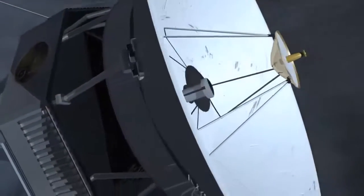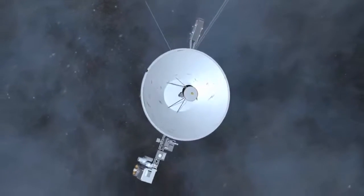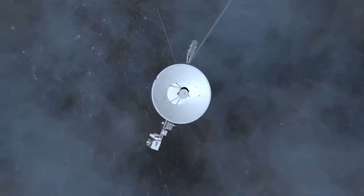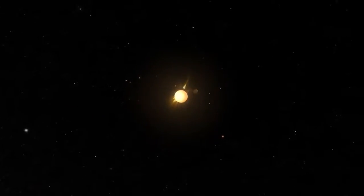The two Voyager spacecraft have been traveling away from Earth for more than 33 years, and they are finally in the outer edge of the solar system. This boundary is marked by the outer reaches of the Sun's magnetic field and solar wind, which form an enormous expanse called the heliosphere.